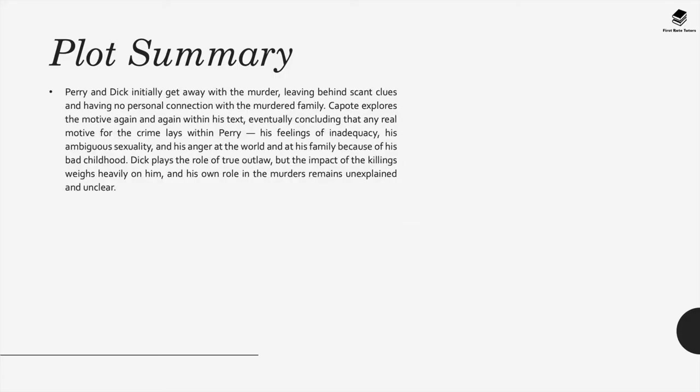Perry and Dick initially get away with the murder, leaving behind scant clues and having no personal connection with the murdered family. Capote explores the motive again and again within his text, eventually concluding that any real motive for the crime lies within Perry — his feelings of inadequacy, his ambiguous sexuality, and his anger at the world because of his bad childhood. Dick plays the role of true outlaw, but the impact of the killings weighs heavily on him and his own role in the murders remains unexplained and unclear.